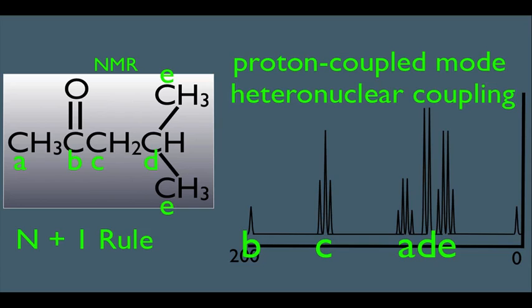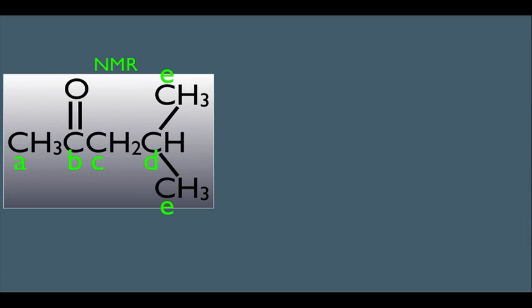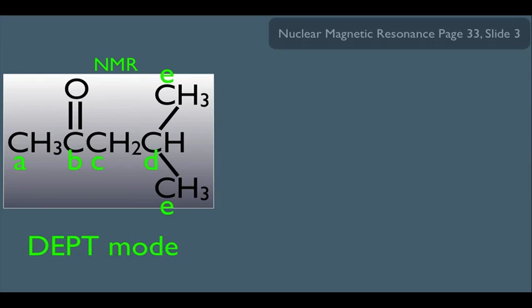However, there's a third mode that we can set the NMR. Let's look at that. This is called DEPT mode, which stands for Distortionless Enhancement by Polarization Transfer. We're going to see that this mode is very valuable in helping us determine structure. So let's look at the data we get when run in this mode. In some cases, it spits out four different spectra.